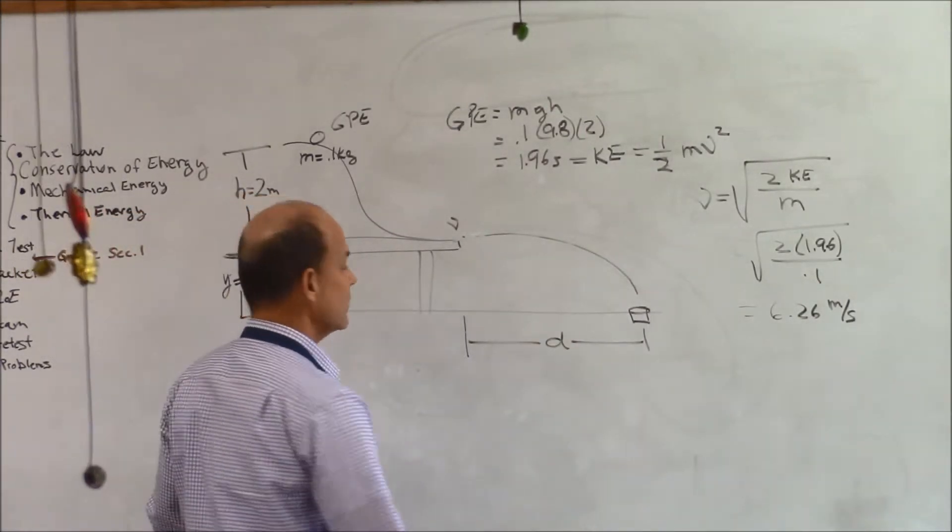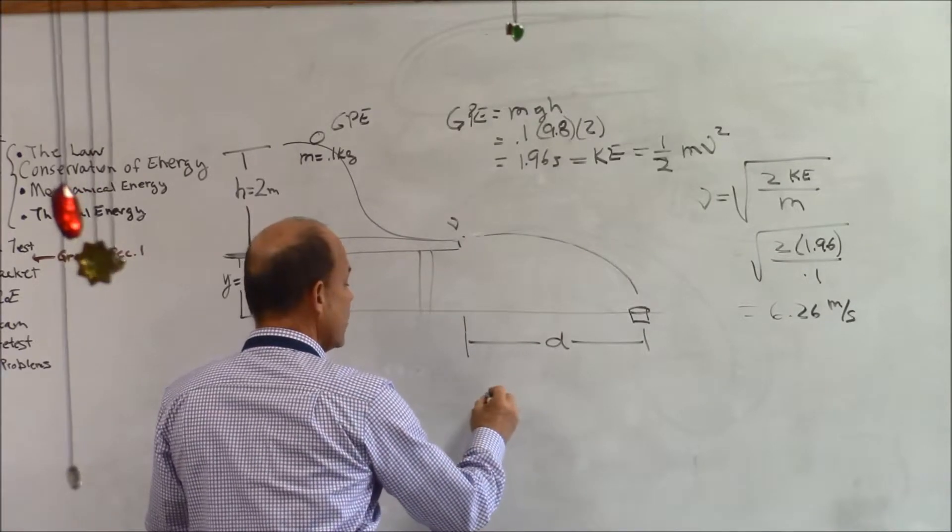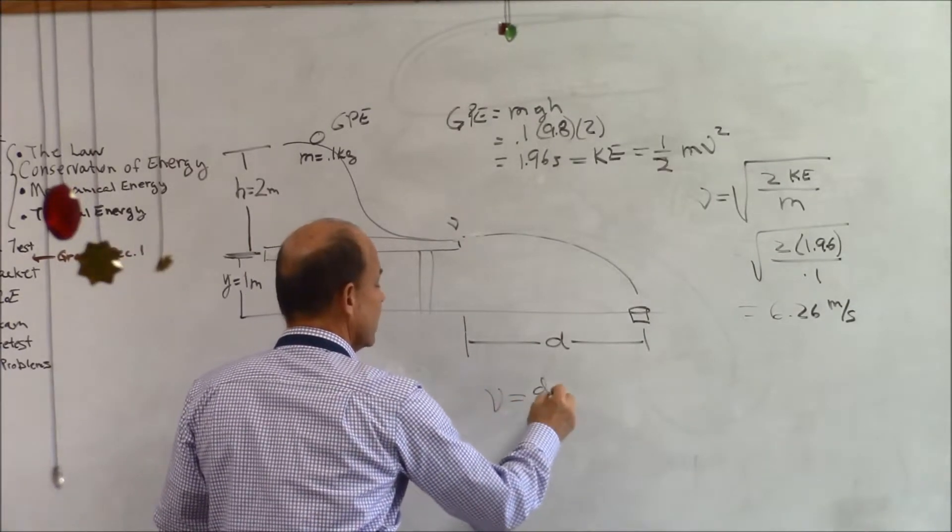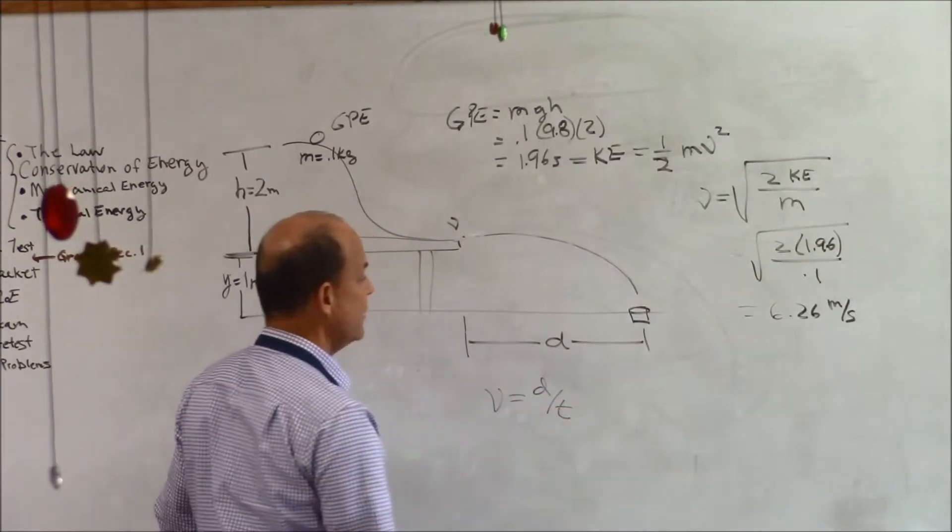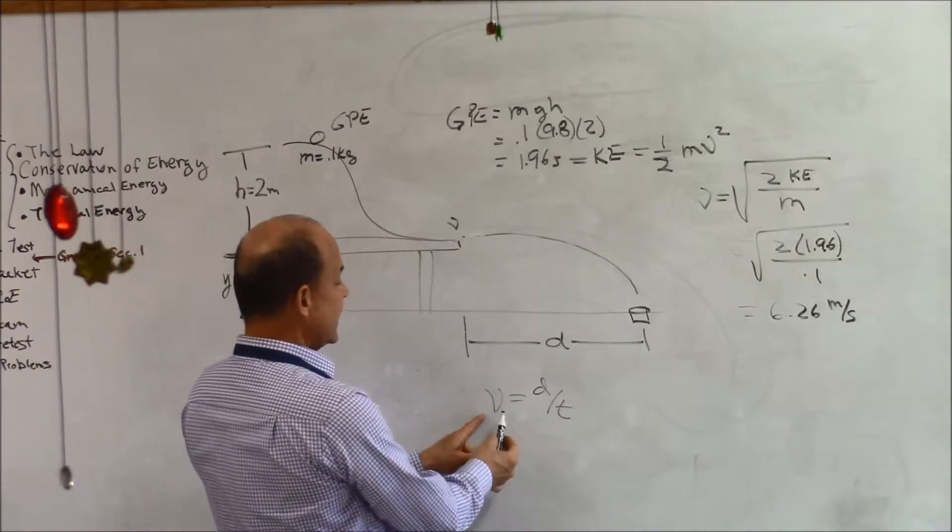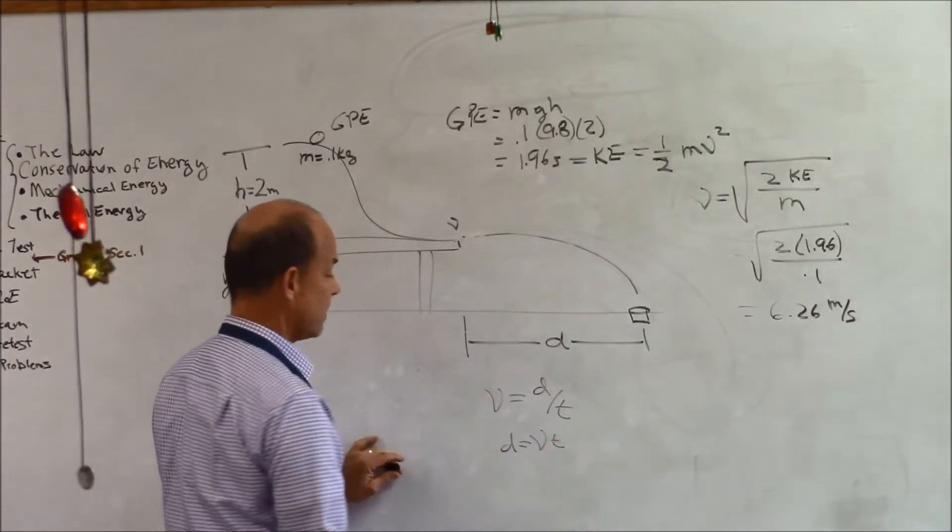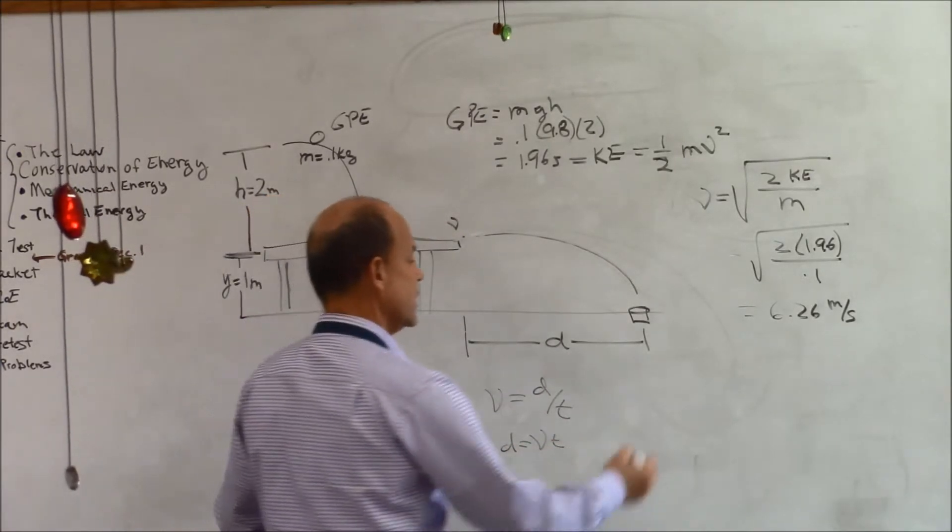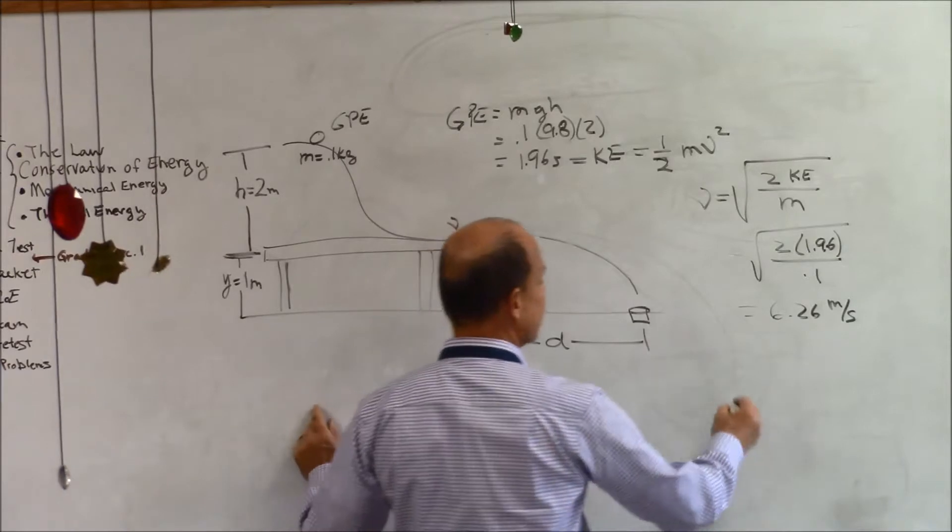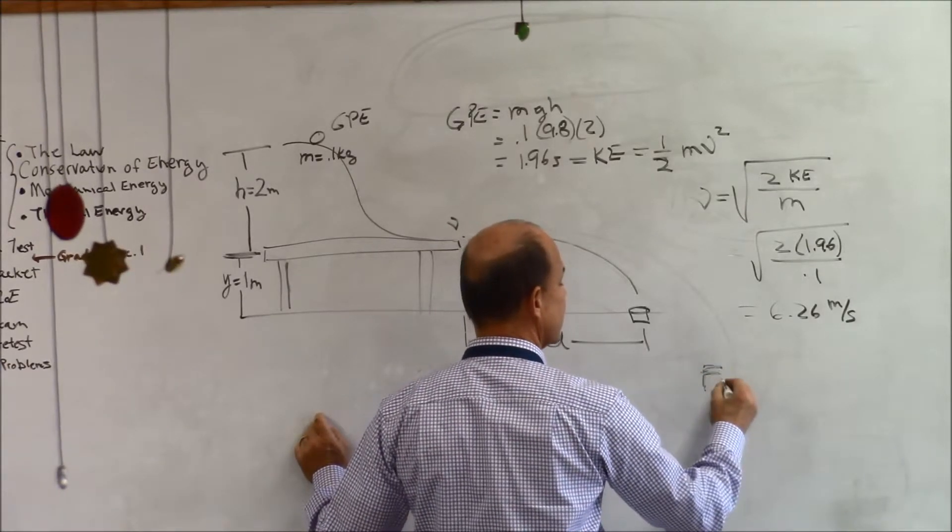Finally, hang with me. If I know the velocity - velocity is equal to distance times time - in order to find out the distance, D is equal to velocity times time. Where does the time come from?